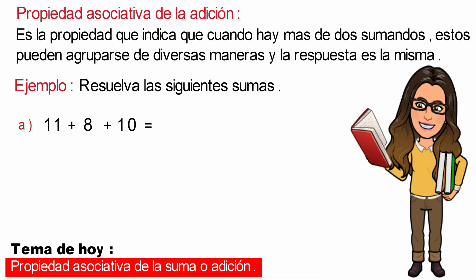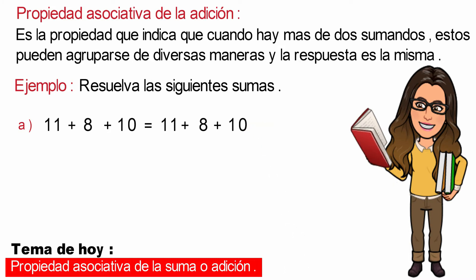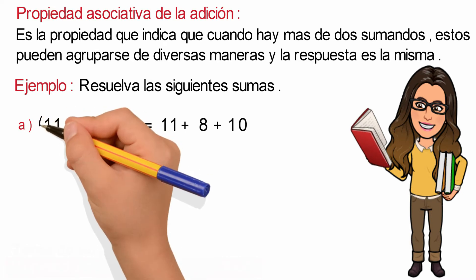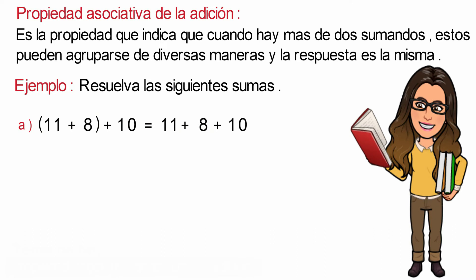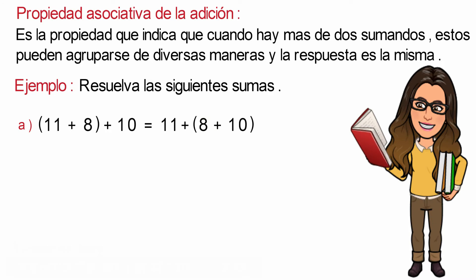Y esto va a ser igual a 11 más 8 más 10. Para comenzar, vamos a asociar dos de los números que se encuentran a la izquierda del símbolo de igualdad. Y de forma similar, vamos a asociar otros dos números diferentes que se encuentran a la derecha del símbolo de igualdad.